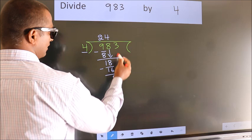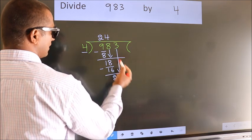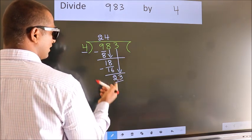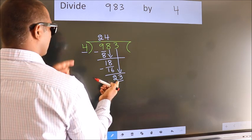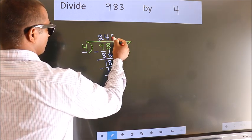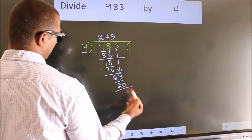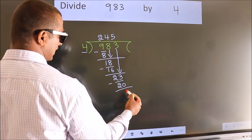After this, bring down the beside number. 3 down, so 23. A number close to 23 in the 4 table is 4 times 5, which is 20. Now we subtract and get 3.